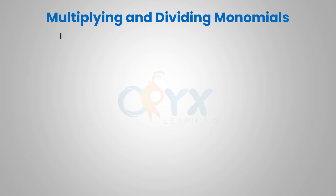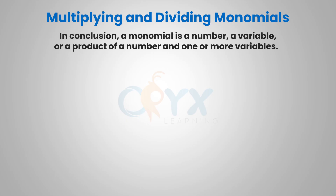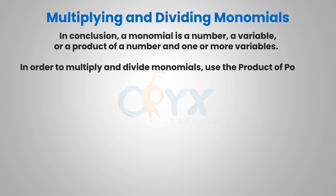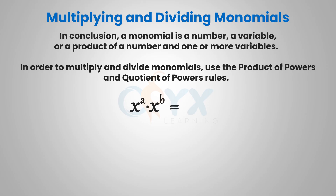In conclusion, a monomial is a number, a variable, or a product of a number and one or more variables. To multiply and divide monomials, we use the product of powers and quotient of powers properties. The product of powers states that with like bases, we add the exponents. The quotient of powers states that when dividing with like bases, we subtract the exponents.